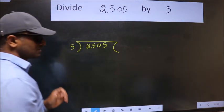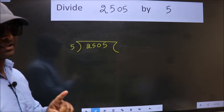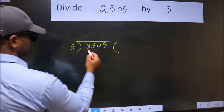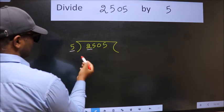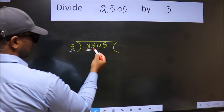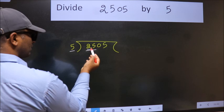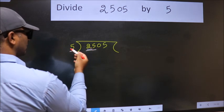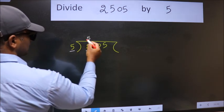This is your step 1. Next, here we have 2. Here 5. 2 is smaller than 5. So we should take two numbers, 25. When do we get 25? In 5 table. 5 fives 25.